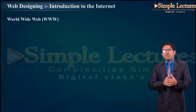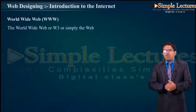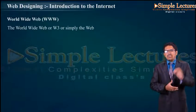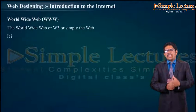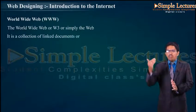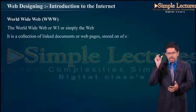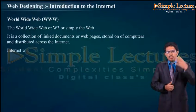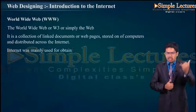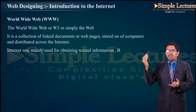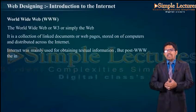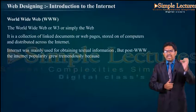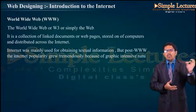Let us first discuss about WWW — World Wide Web. The World Wide Web, or W3, or simply the web, is a collection of linked documents or web pages stored on a computer and distributed across the internet. Internet was mainly used for obtaining textual information, but post-WWW the internet popularity grew tremendously because of the graphic-intensive nature of the World Wide Web.